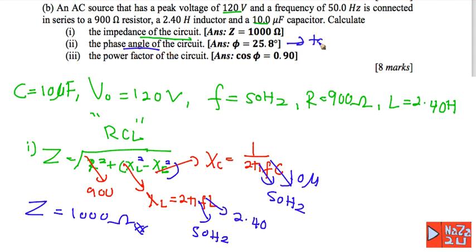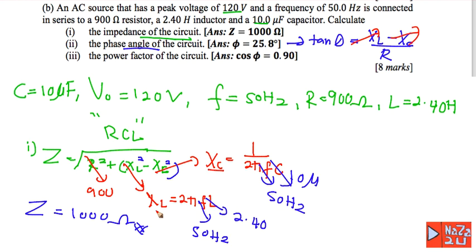Number two: calculate the phase angle of the circuit. Use the equation tangent theta equals X L minus X C divided by R. Using the values for X L, X C, and R already found, the value of theta is equal to 25.8 degrees.